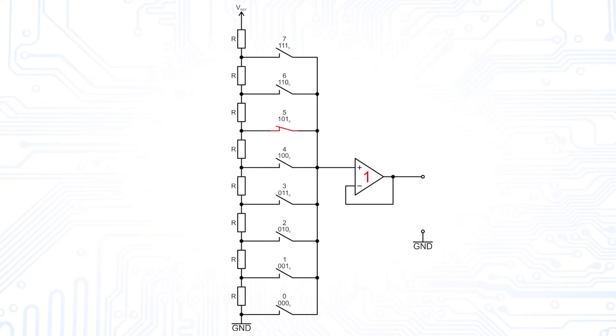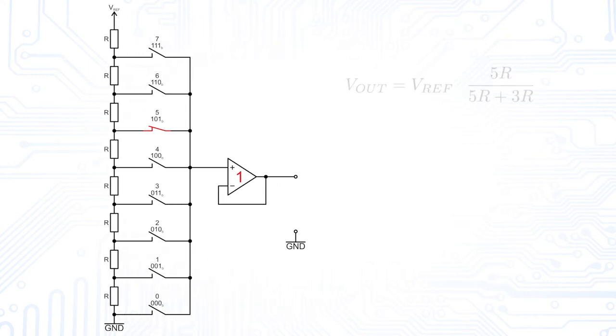Calculating the voltage at the non-inverting terminal of the amplifier then becomes a simple resistor-divider equation. Finally, we get a final value of 5/8 of the reference voltage.